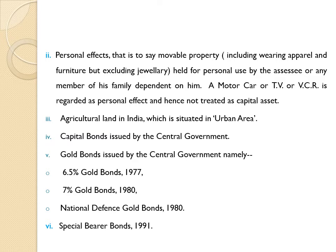To summarize, for personal effects: wearing apparel, furniture, TV, VCR, and motor car are personal effects and are not considered capital assets. Capital assets also do not include agricultural land situated in urban areas. Additionally, capital bonds and gold bonds issued by the central government — namely 6.5% Gold Bonds 1977, 7% Gold Bonds 1980, National Defence Gold Bonds 1980, and Special Bearer Bonds 1991 — are not included under capital assets.